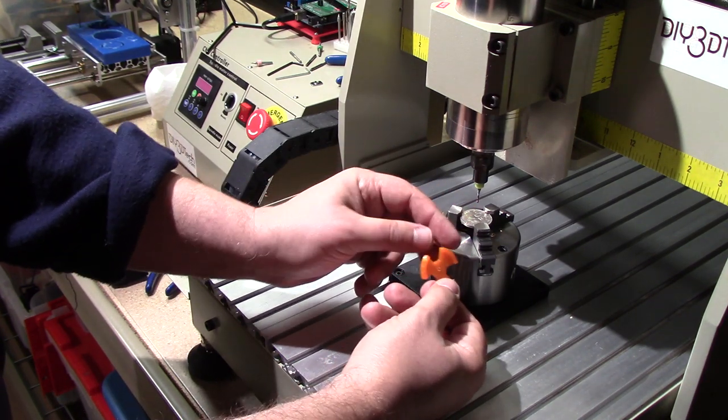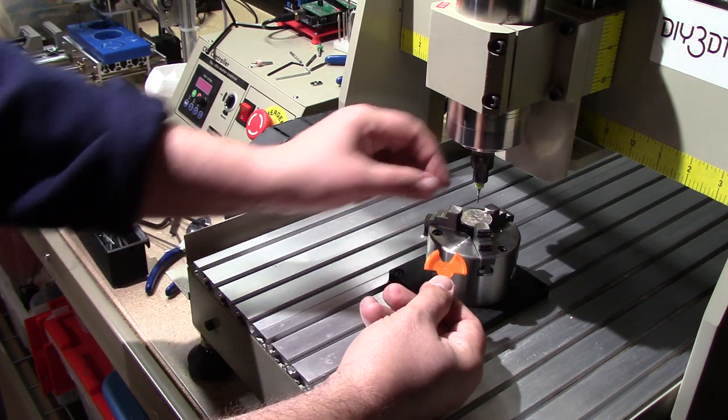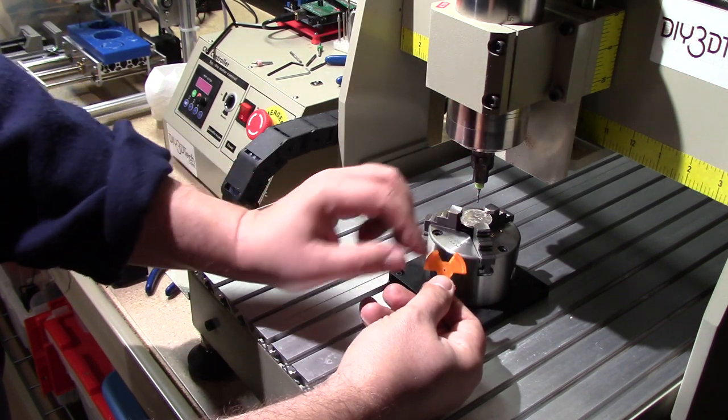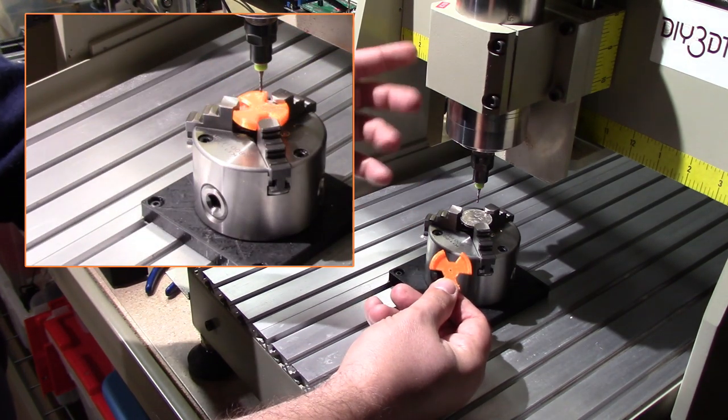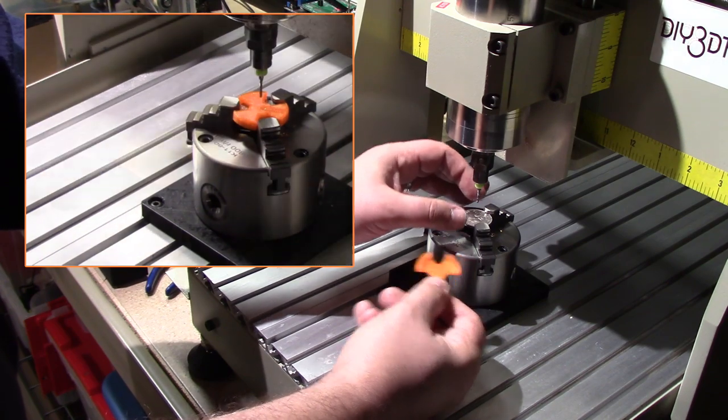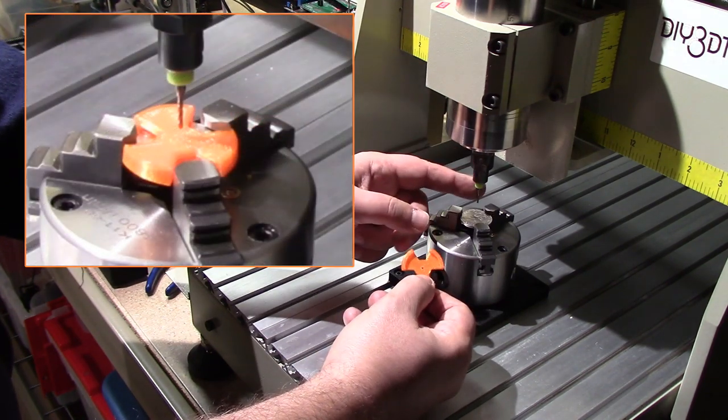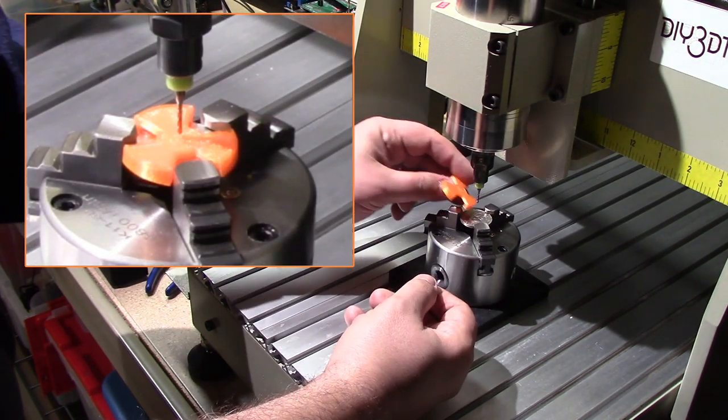So what this does is it has small ridges around here which go around the rim of the coin and then I have a centering hole which is the size of the bit. Now in OpenSCAD I can make different fixtures for different size coins, different size bits, so it's actually really pretty cool.